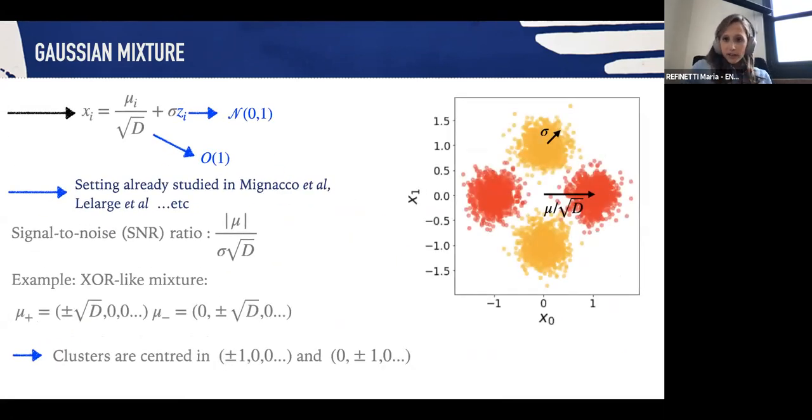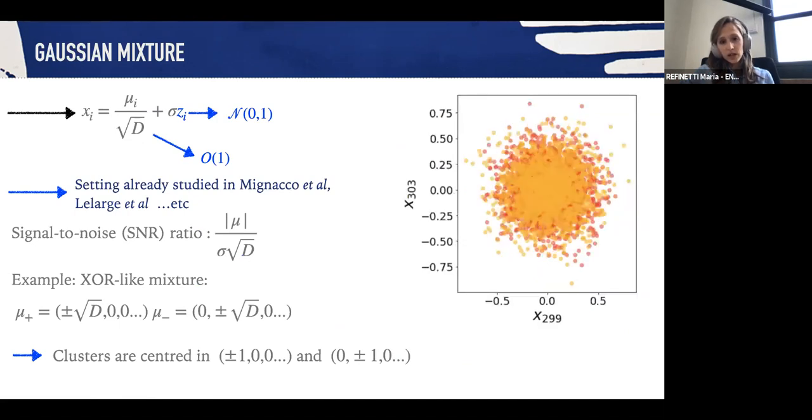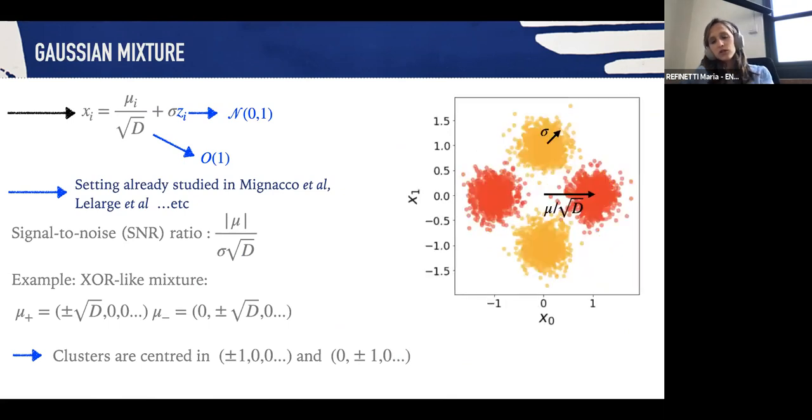We're going to boil down to a simpler data distribution, an XOR-like mixture in which the means of the mixture are along the x-axis and the y-axis at distance one away from the origin, and we're going to study two types of architectures on this distribution. If I show you this first plot, you might tell me this is a very simple model. I can basically see with bare eyes how I should separate this mixture.